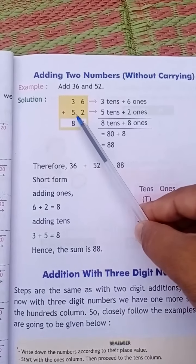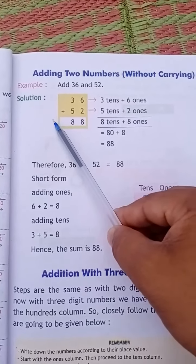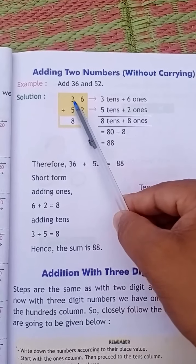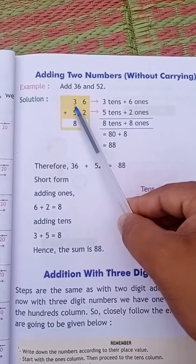3 plus 5 equals how much? Here you can also draw 5 lines. So starting from 3, you need to count 5 lines. 3, 4, 5, 6, 7, 8.